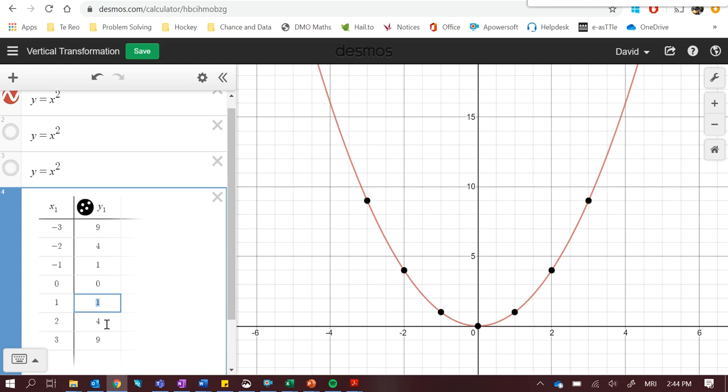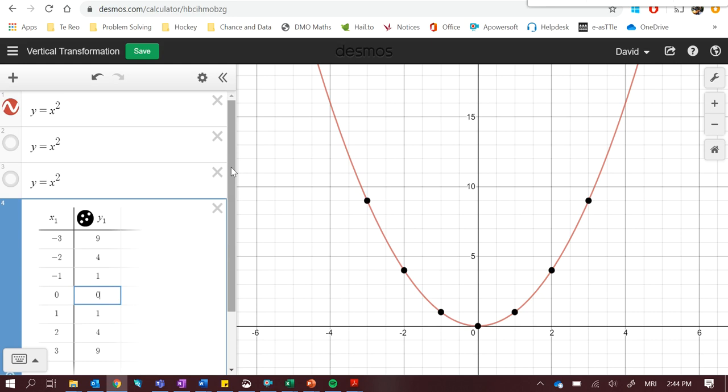Okay, so let's have a look at vertical transformation and how we create vertical transformation and what it looks like. At the moment we're looking at y equals x squared. Let's introduce a new graph. Let's introduce a curve of y equals x squared plus 3.